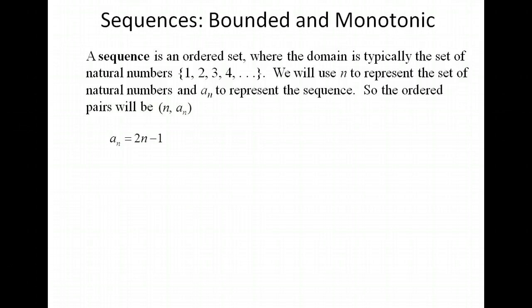We're going to use the ordered pair (n, a_n) to represent the ordered pairs which you would normally think of as x and y. So n is going to be our set of natural numbers and a_n is going to be the output, the range values. Let's start with a specific example: the sequence 2n minus 1. We can find the ordered pairs by plugging in the natural numbers. If we plug in 1, we get 2 times 1 minus 1, which gives us 1. So the first output number for this sequence is 1.